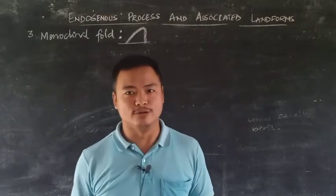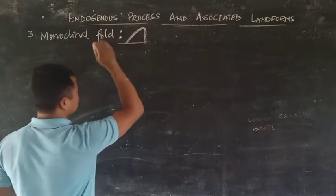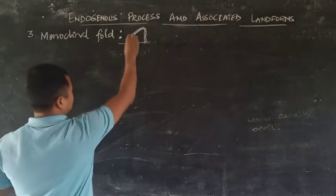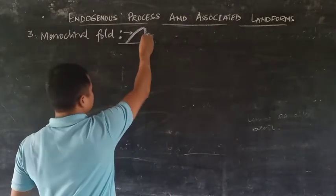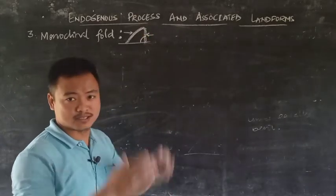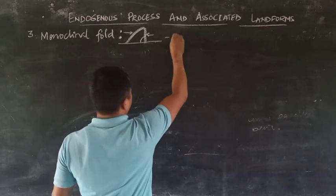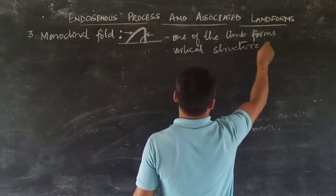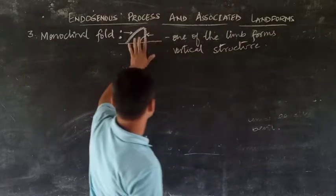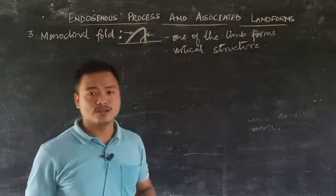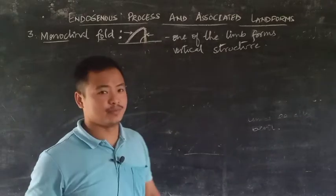The third type is the monoclinal fold. In this fold, more force is applied on the gentler slope side while less on the steeper slope side, causing the steeper side to form almost a 90-degree or vertical structure. When one of the limbs forms a vertical structure while the other remains a gentler slope, it is known as a monoclinal fold. The term 'mono' means one, so only one limb stands vertical.